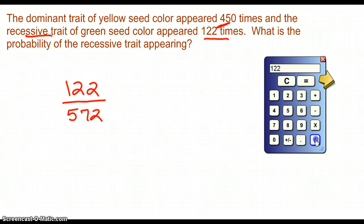So 122 divided by 572 gives me 0.21. Since this could be a percent, we'll go to the nearest hundredth, or 21%. So 21% of the time, I expect to get the recessive trait of green color.